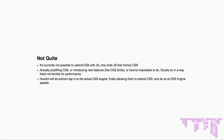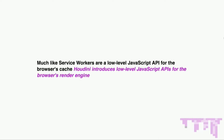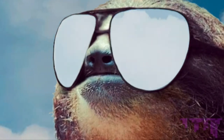What Houdini is going to let us do is actually tap into the CSS render engine, finally allowing us to extend CSS and do so at CSS engine speeds. Much like service workers are a low-level JavaScript API for the browser's cache, Houdini is going to introduce low-level JavaScript APIs for the browser's render engine. And that's pretty cool.